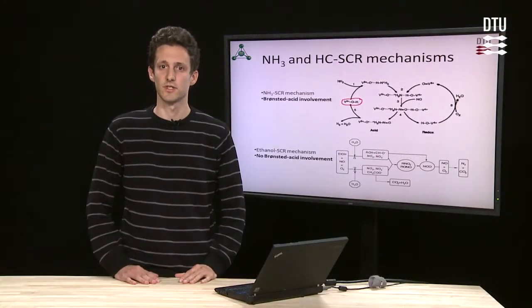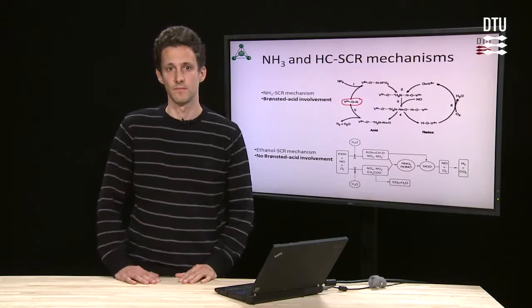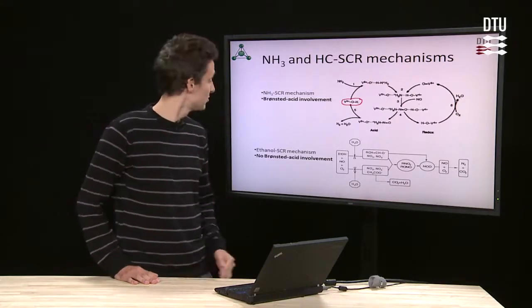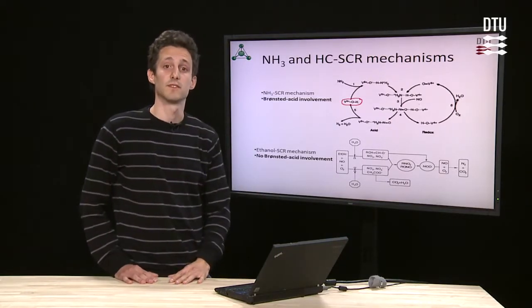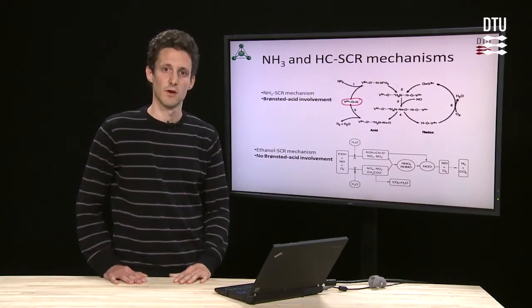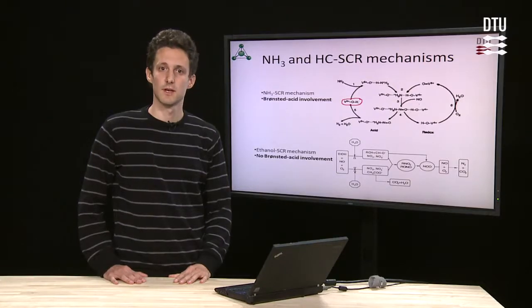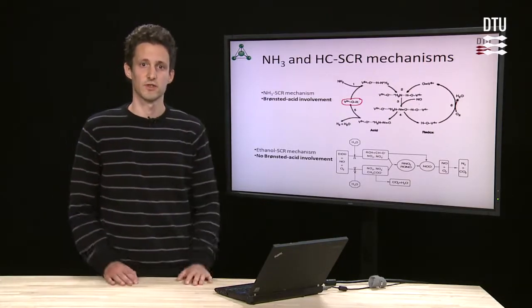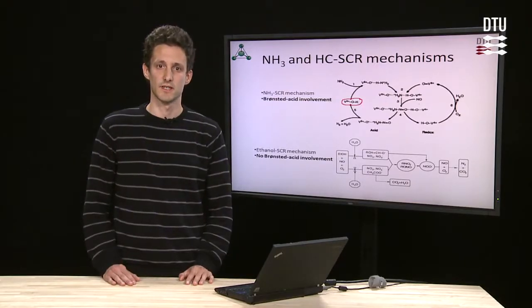This leads to chemical and irreversible deactivation of the catalyst. On the other hand, we can also use ethanol and other hydrocarbons instead of ammonia. The popular mechanisms for this process do not mention the involvement of Bronsted acids, though this process should be more potassium tolerant.